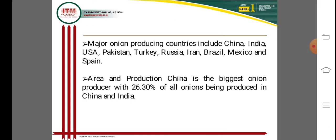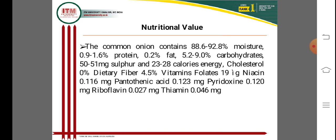The major onion producing countries are China, India, USA, Pakistan, Turkey, Russia, Iran, Brazil, Mexico, and Spain. China is the biggest onion producer, accounting for about 26 percent of all onion production globally, and out of the world's total, China produces around 70 percent.